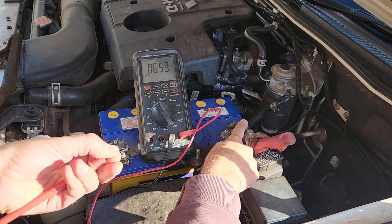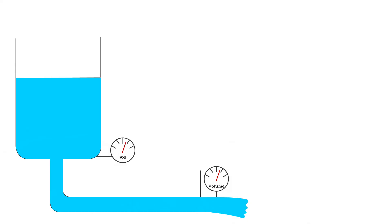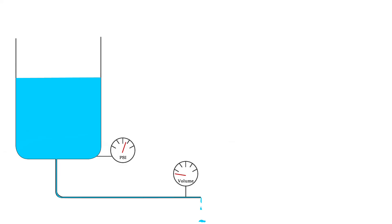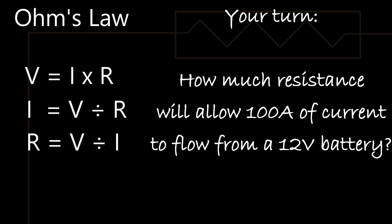Going back to our water illustration, this is just like the pipe being as skinny as a drinking straw — since the pressure is so low, the water just comes out at a little dribble. If you want some homework, pick the right version of Ohm's Law to work out how much resistance would allow 100 amps of current to flow from a 12-volt battery, and you'll see it's very low.